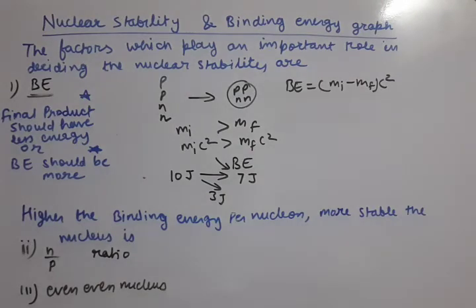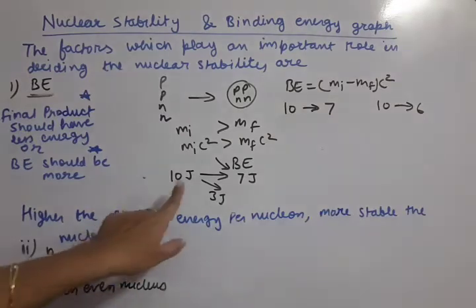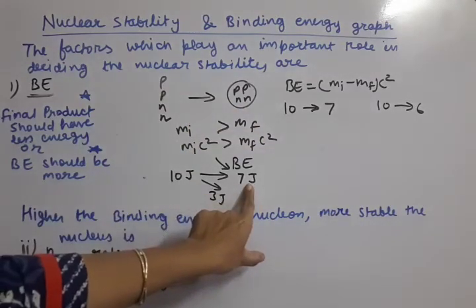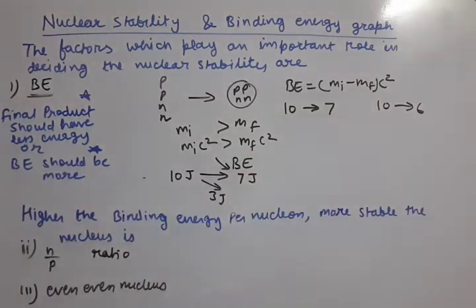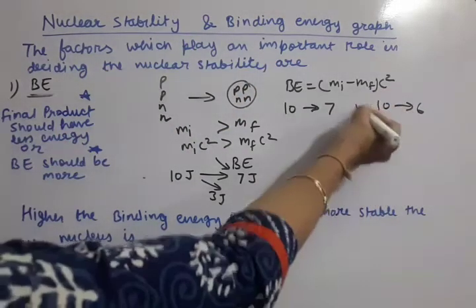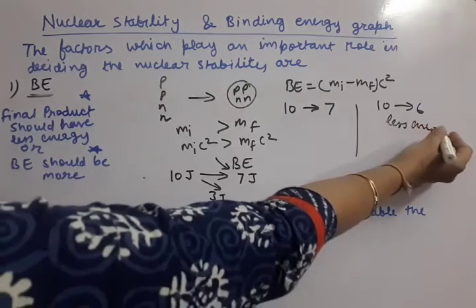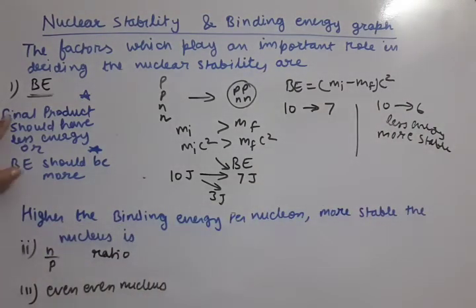Now we have to discuss whether binding energy should be more or less for stability. Consider two events: initial energy is 10 joules, and the final product energy is either 7 joules or 6 joules. Which event gives a more stable nucleus? Obviously, in the second event the final nucleus has less energy, so it is more stable. The final product energy should always be less for more stability.